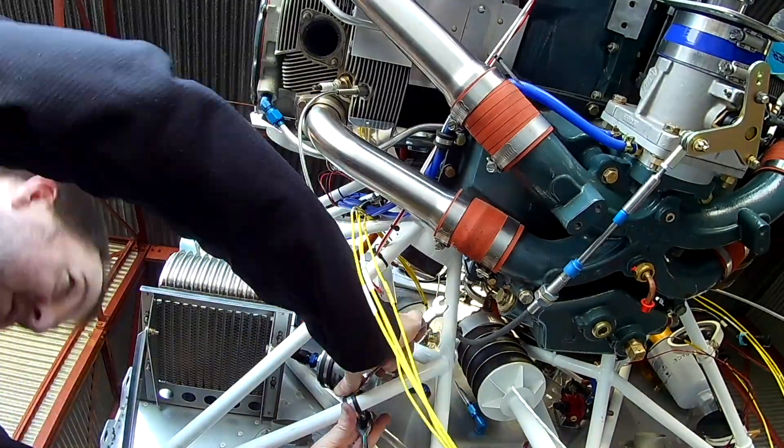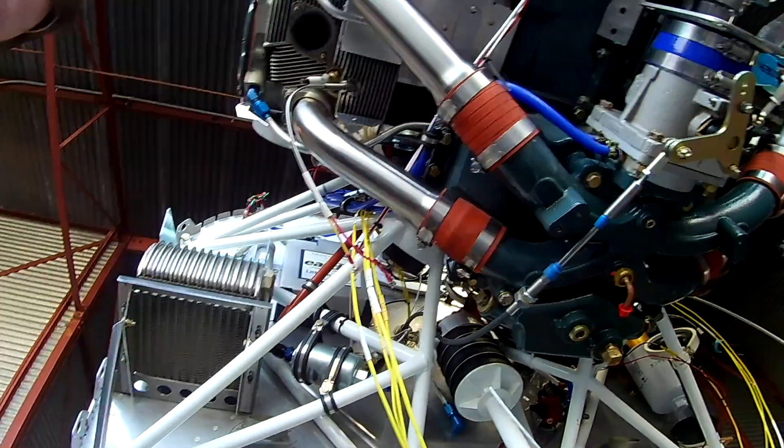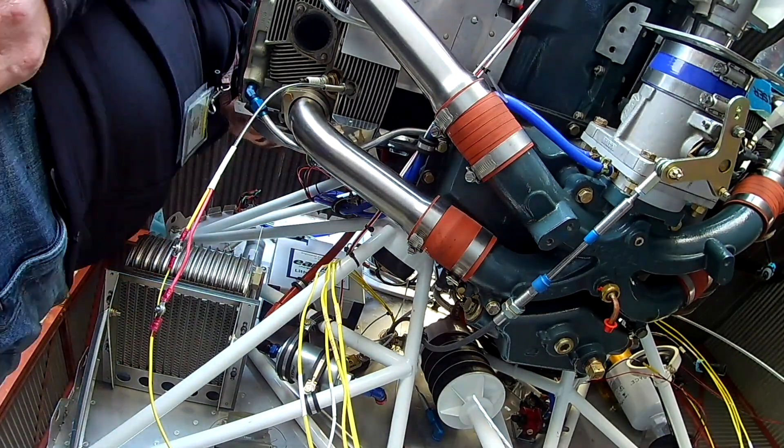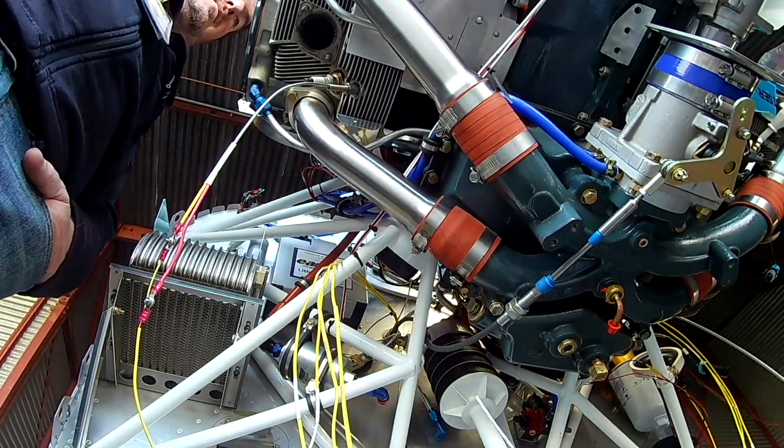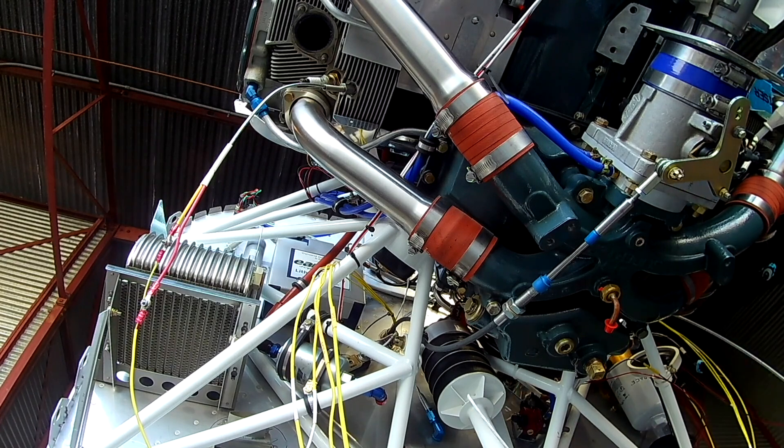Now it's time to put the fuel regulator into its final place on the firewall. The line that comes out of the number four cylinder goes through the back baffles, turns downward, and then mounts into the fuel pressure regulator.